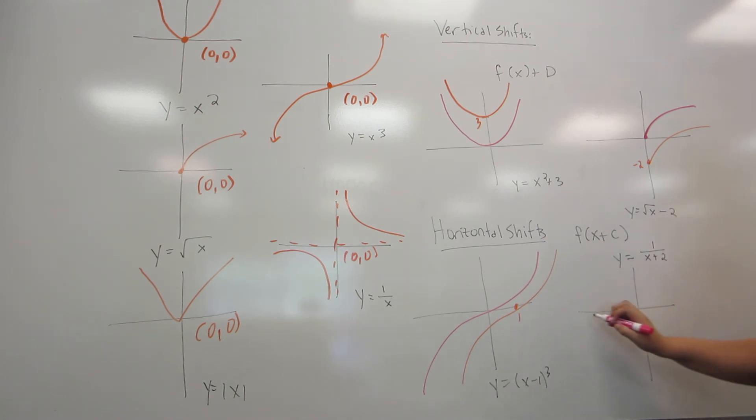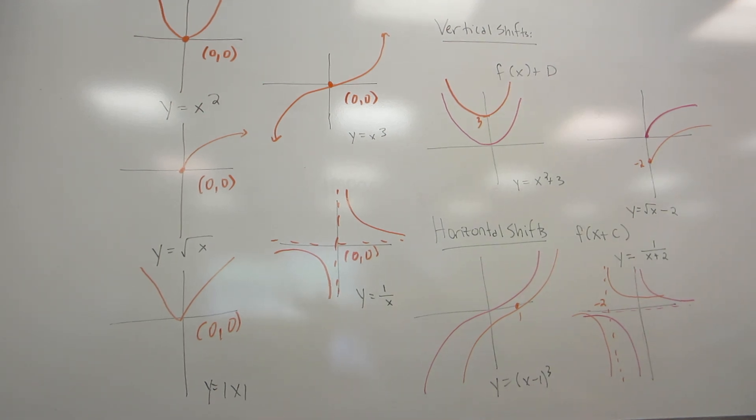We look at this example, which starts with our asymptotes right along the axes. Because I'm adding 2, I'm actually going to move it left 2. So this moves my asymptote to negative 2, and the graph moves along with it. Again, be very careful. You only ever need to label one point.